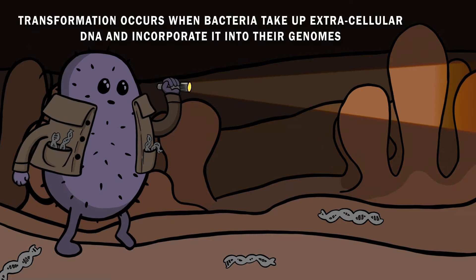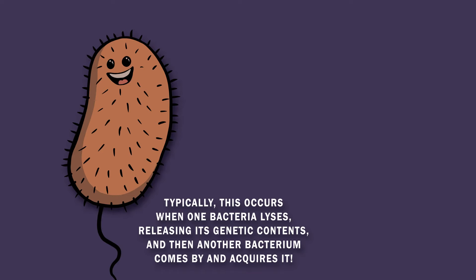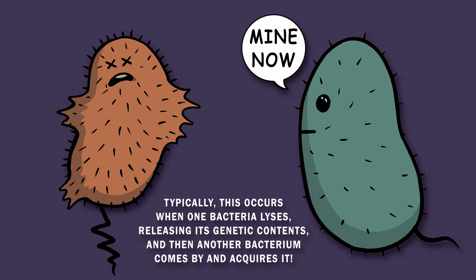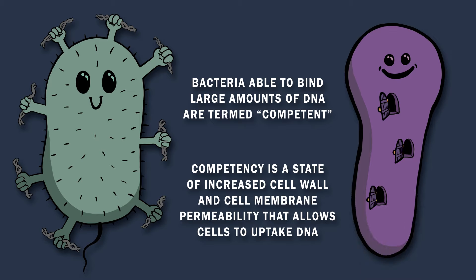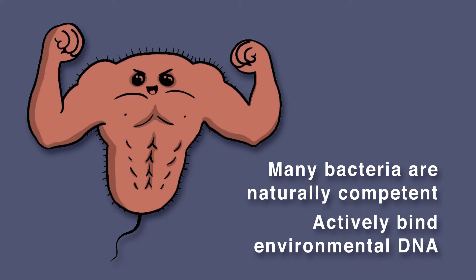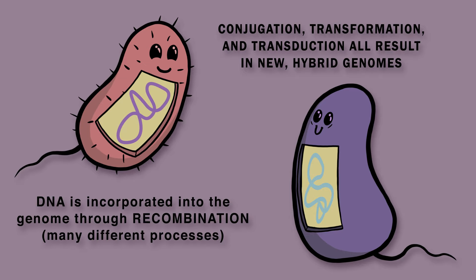Transformation occurs when bacteria take up extracellular DNA and incorporate it into their genomes. Typically, this occurs when one bacterium lyses, or splits open, releasing its genetic contents, and then another bacterium comes by and acquires it. Bacteria able to bind large amounts of DNA are termed competent. Competency is a state of increased cell wall and cell membrane permeability that allows cells to uptake DNA. Many bacteria are naturally competent and so actively bind environmental DNA. After transport into their cytoplasm, the bacterium can incorporate the new DNA into its genome through the process of recombination.